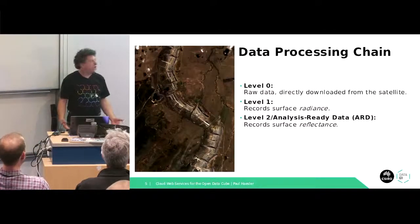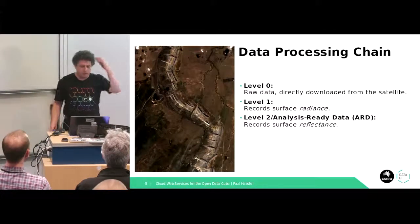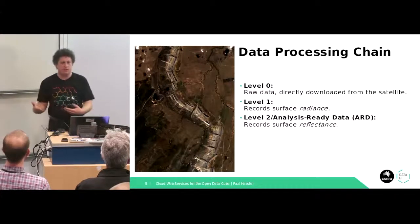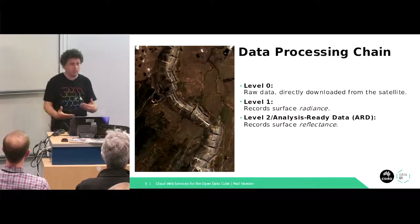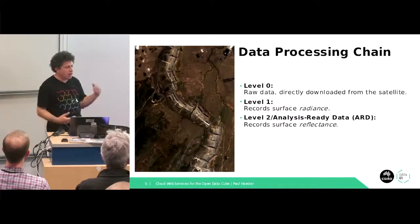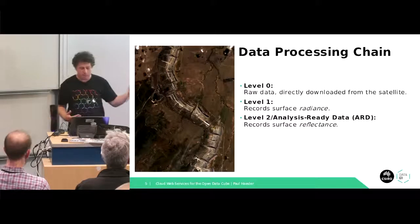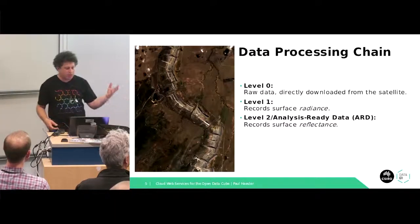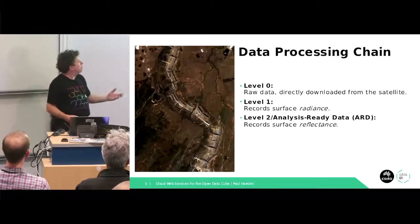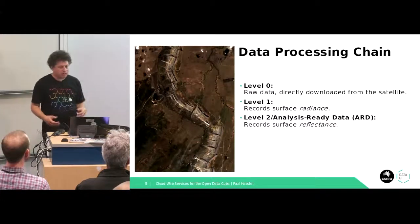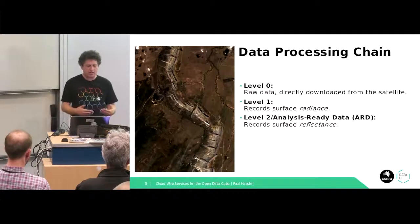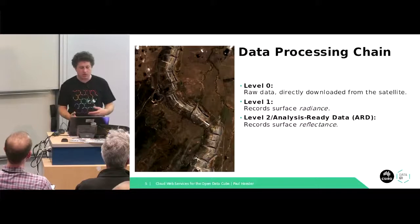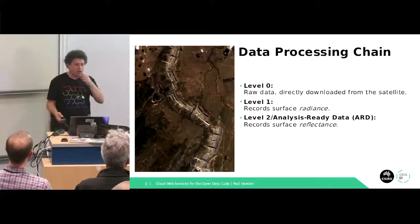The data fresh off the satellite is not in a very useful form, so it has to go through preliminary processing first. Level zero is that raw data direct off the satellite. Once we've added georectification — the longitude of each point — we call that level one. But most interesting is the analysis-ready data, where we correct for things like satellite observation angle, solar incidence angle, atmospheric conditions, and terrain angle.